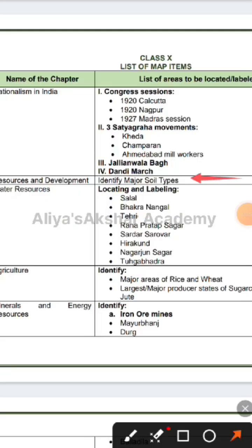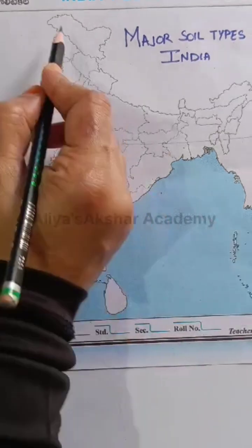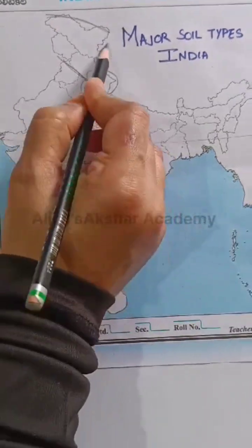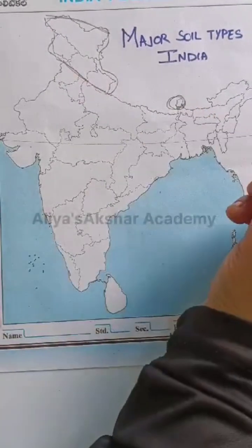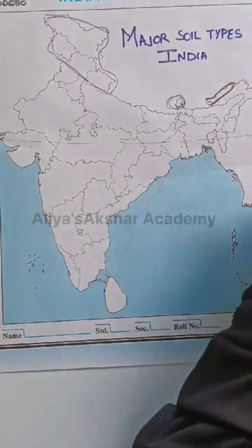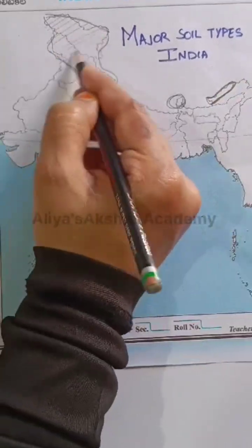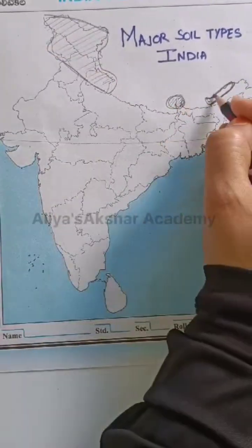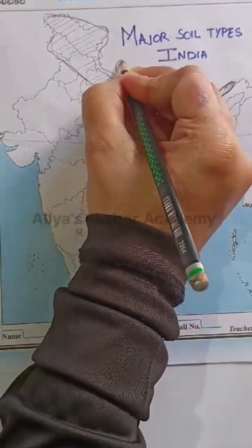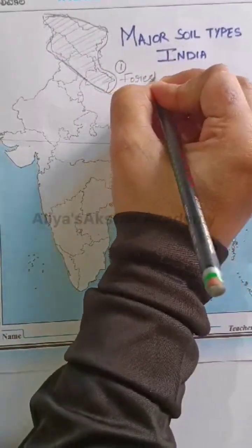According to the CBSE board map pointing of major soil types from geography chapter 1, Resources and Development, this is just for the identification of the soil type.